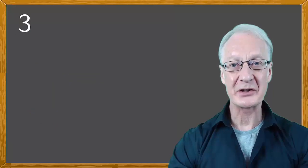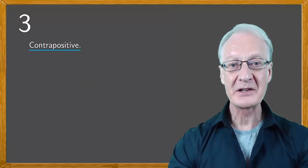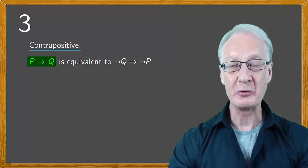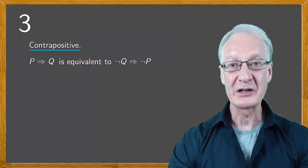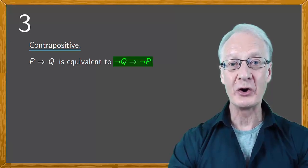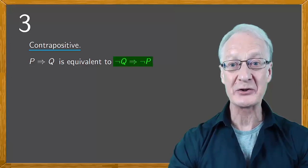A similar technique is the contrapositive. This is based on the fact that the propositions P implies Q and NOT Q implies NOT P are equivalent. So, if we can show that NOT Q implies NOT P is true, we can conclude that P implies Q is true.